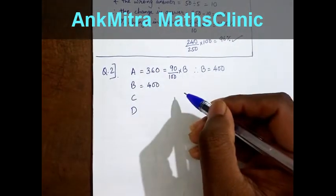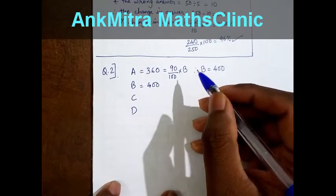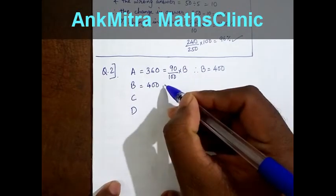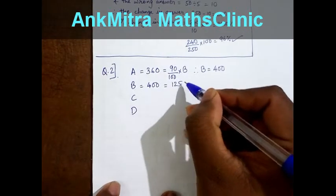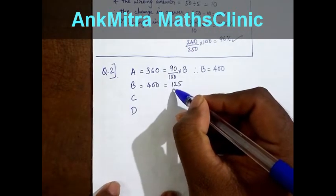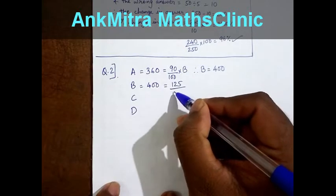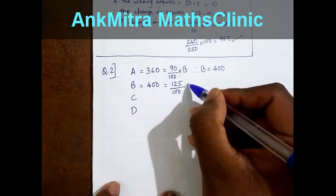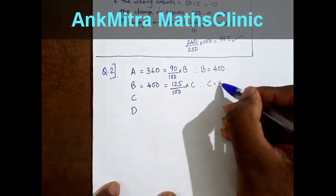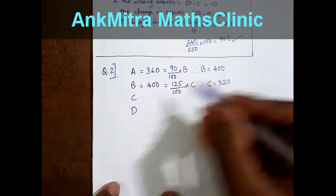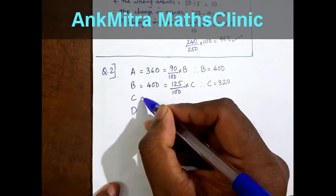Then they have mentioned that B has scored 25% more than C. That means B's 400 marks is actually 125% of C. So we can write it as 125 upon 100 multiplied by C. This gives C is equal to 320.